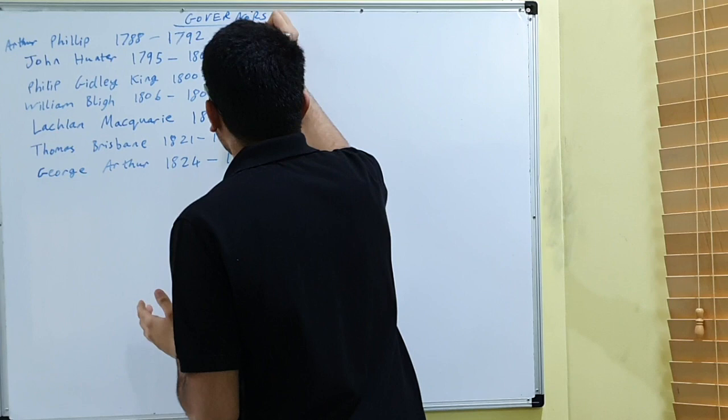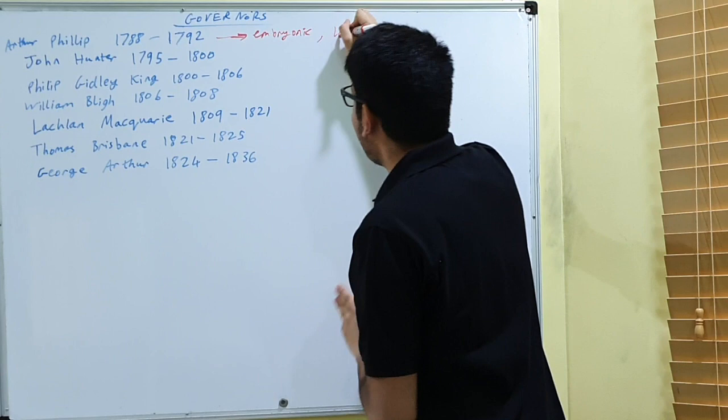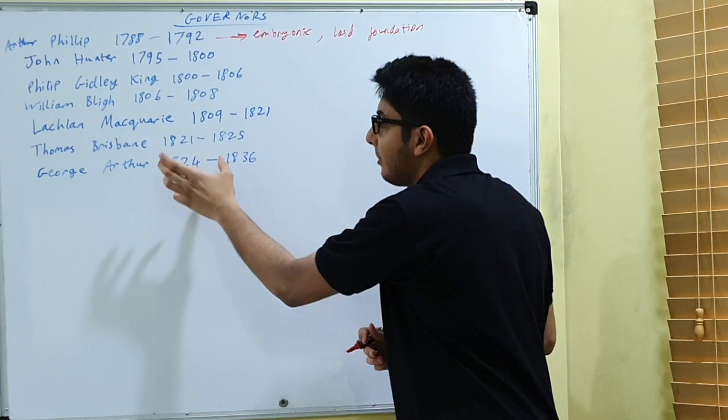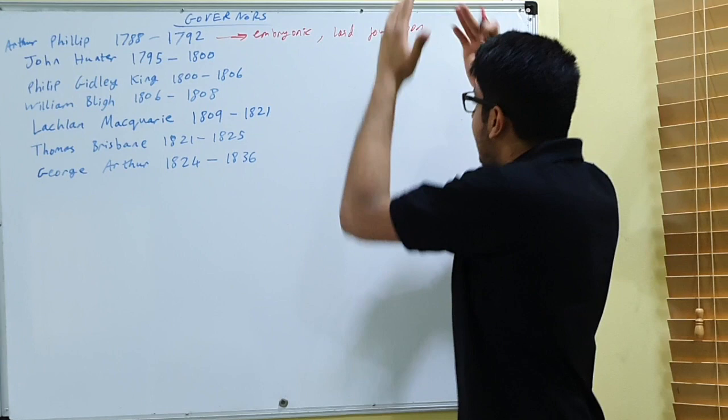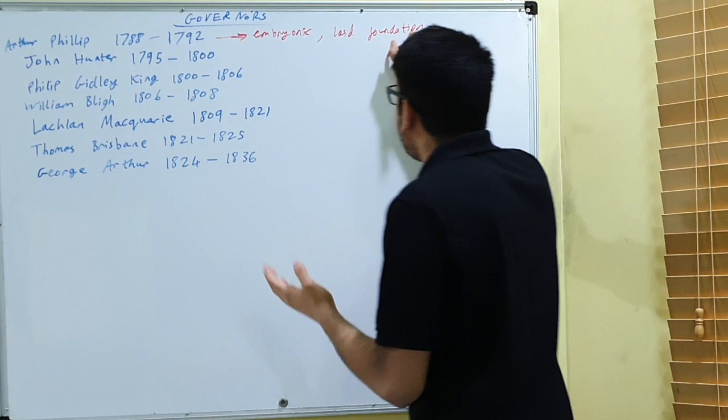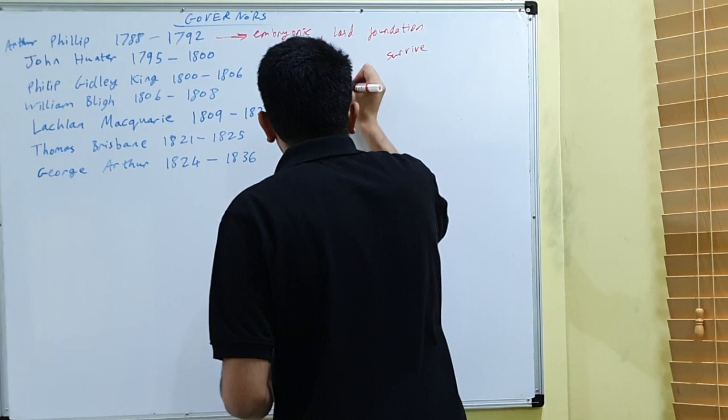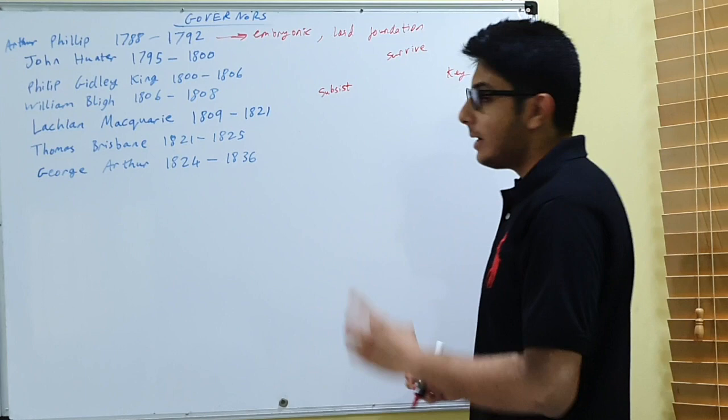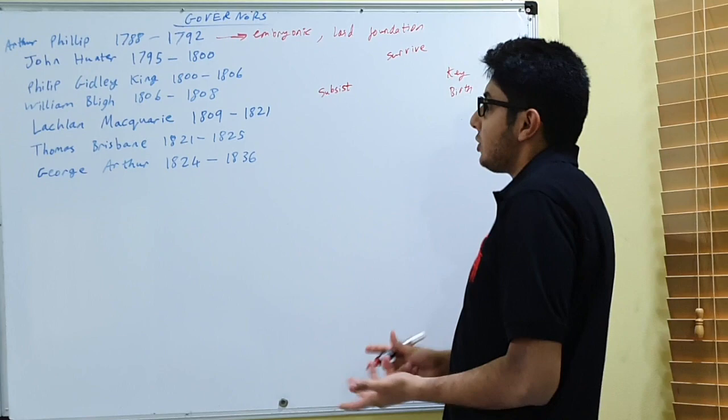Arthur Phillip was very important in an embryonic sense—use this analytical language, embryonic. He laid the foundation upon which other governors were able to build. He set the platform. He allowed the colony to survive, to subsist. He was key in the birth of British Australia.